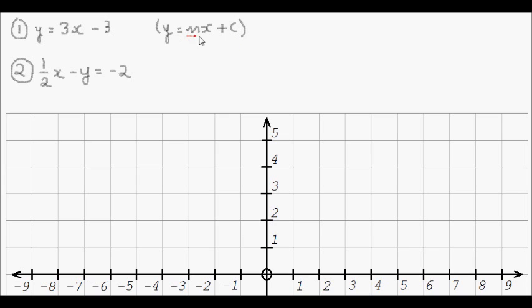Where m is the gradient and c is the y-intercept, and it looks like in equation 1 we've already got the equation in that form. In equation 2 we're going to have to manipulate a little bit to get it into y equals mx plus c form. So let's do that.